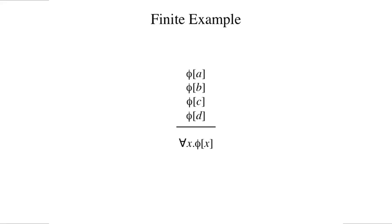Suppose, for example, we have a language with just four object constants and no function constants. Then we can write a domain closure as shown here. If the schema is true of A and B and C and D, then it's true of everything.